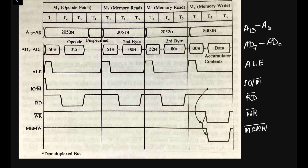For the opcode fetch we have four T states: T1, T2, T3, T4. During the first three T states the processor reads the opcode from the memory unit. The fourth T state T4 is for decoding the opcode — the meaning of that opcode is decoded in this fourth T state.